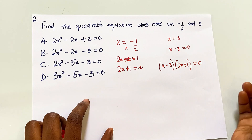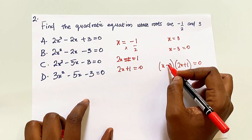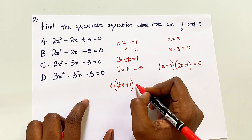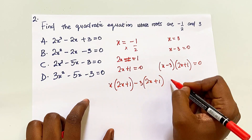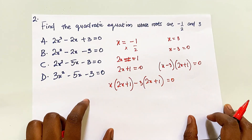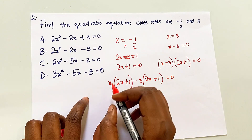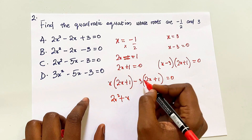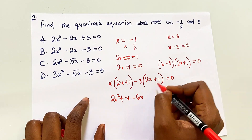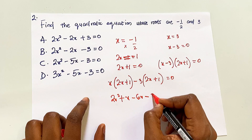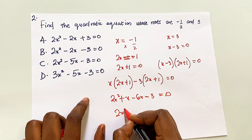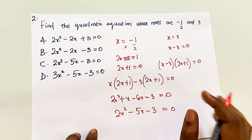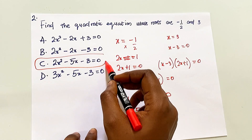Expanding (x - 3)(2x + 1): use x to multiply everything and -3 to multiply everything. x × 2x = 2x², x × 1 = x, -3 × 2x = -6x, -3 × 1 = -3. So we have 2x² + x - 6x - 3 = 0, which gives 2x² - 5x - 3 = 0. Our answer is C.